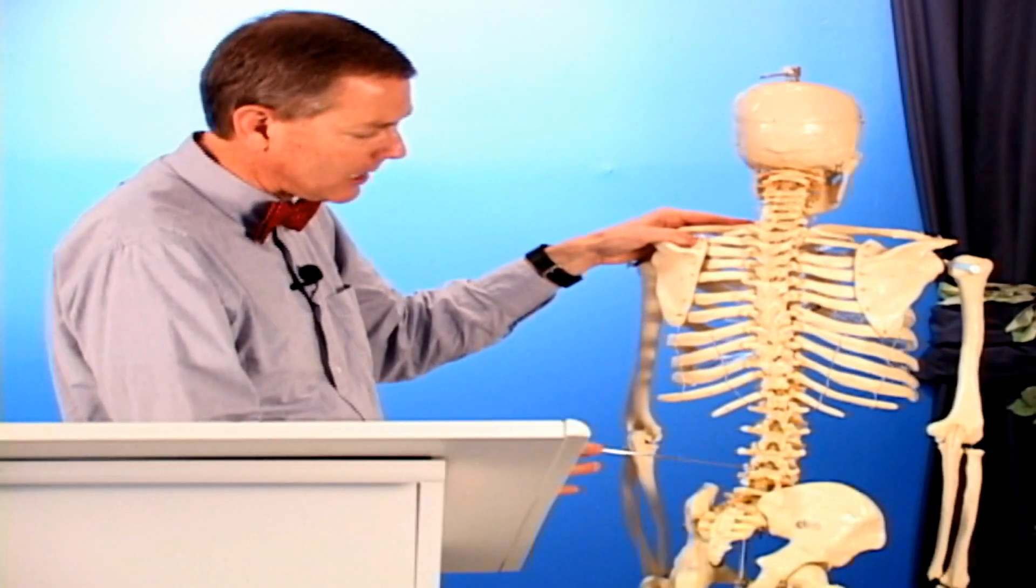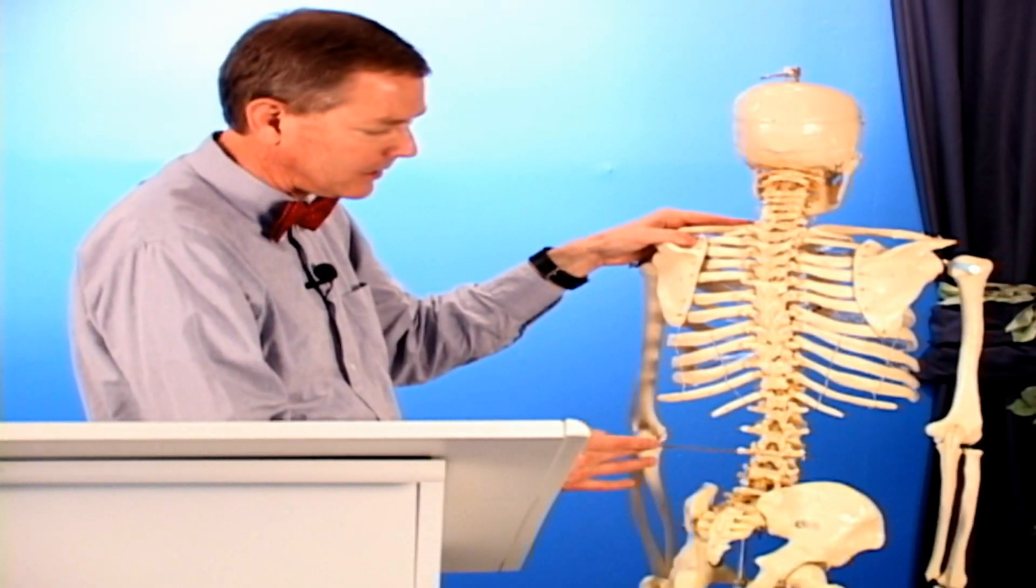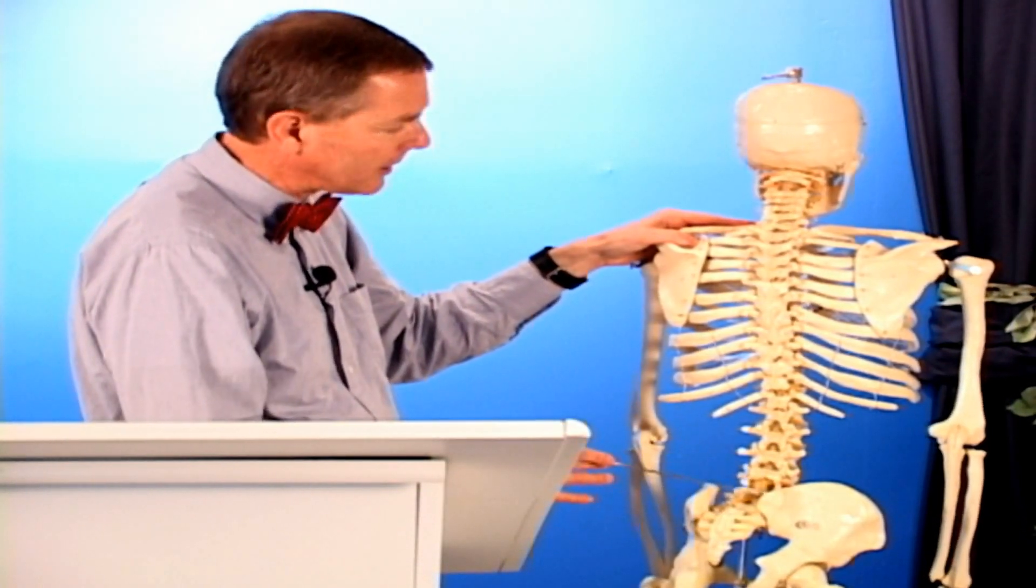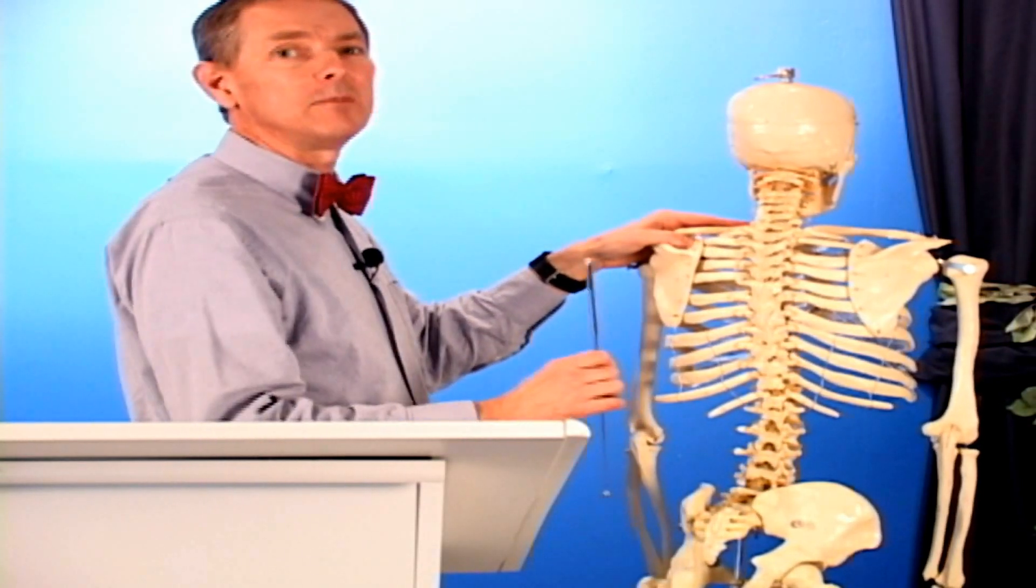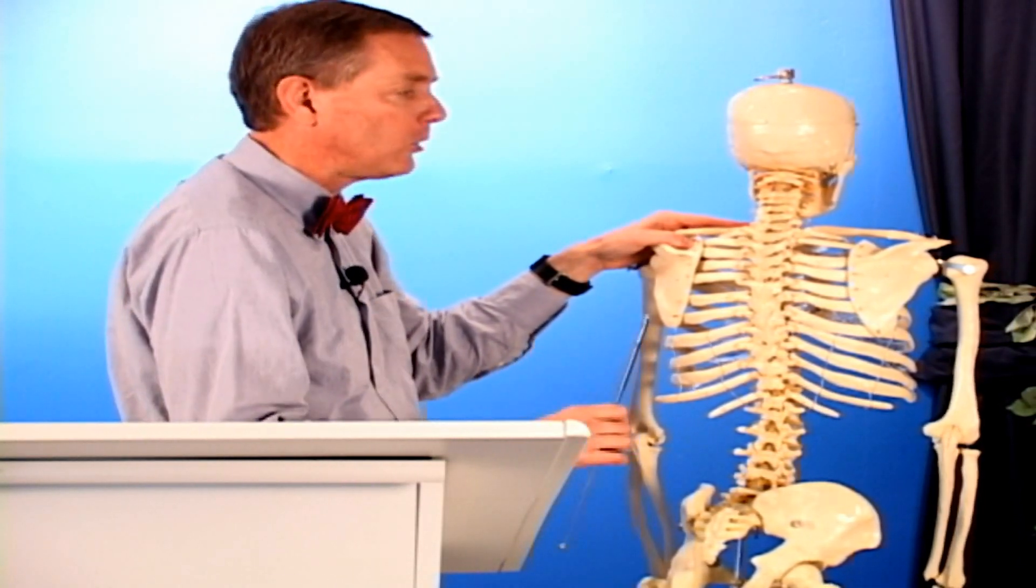If you lump most of them together, they're called the erector spinae. They have various attachments between spinous processes and transverse processes, running up and down the spine. The erector spinae obviously extend the spine, making it more erect, pulling you backwards and upwards.